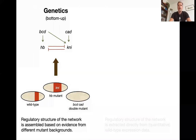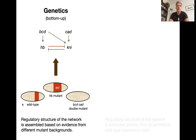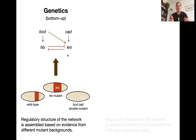The approach we took was revolutionary at the time and had never been used in biology. If you deconstruct the genetic network by genetics, you mutate the different factors, look at mutants, and draw in arrows one by one to reconstruct the network — what Lindley Darden called a mechanistic sketch. What we did was the complete opposite: we took the wild-type gene expression pattern and inferred from it what the system does, inferring the network from wild-type expression patterns.